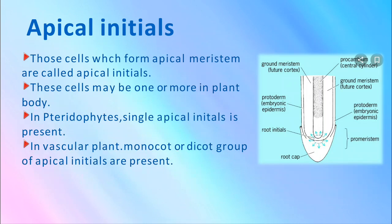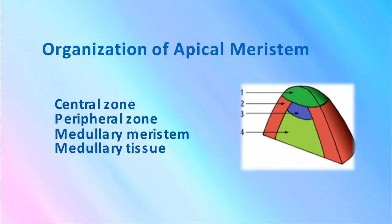Apical initials: those cells which form the apical meristem are called apical initials. These cells may be one or more in a plant body. In bryophytes, a single apical initial is present; in vascular plants such as monocots or dicots, a group of apical initials are present. The organization of apical meristem includes a central zone, peripheral zone, medullary meristem, and medullary tissues.